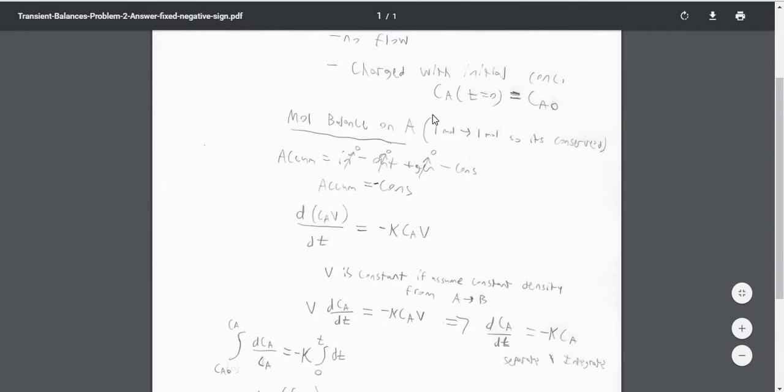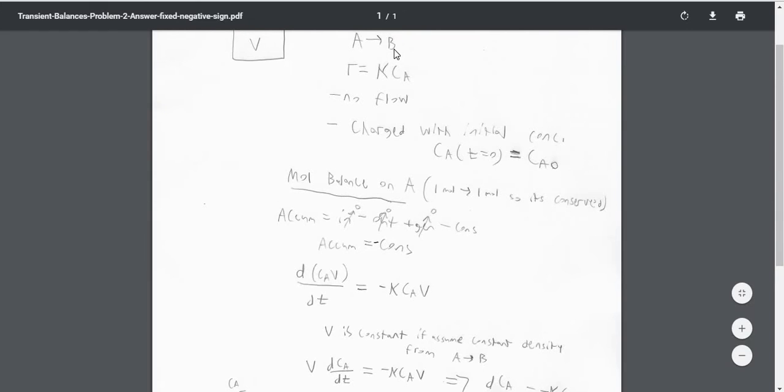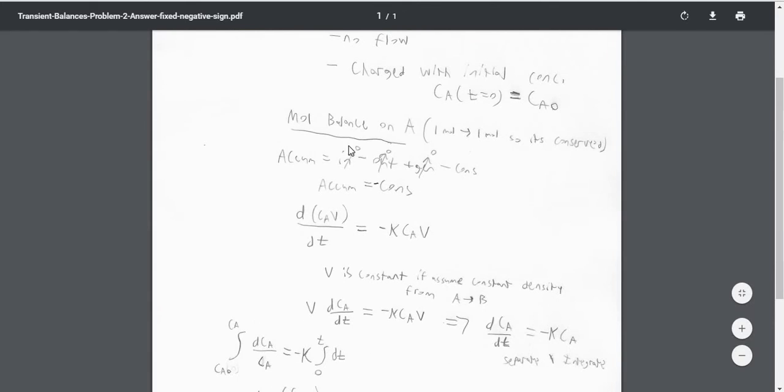So we're going to do a mole balance on A. The reason we can do a mole balance is since it's 1A goes to 1B, the amount of moles is conserved. So if you look, we have accumulation because we know that A is actually going to be disappearing over time.